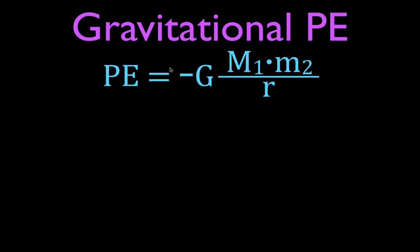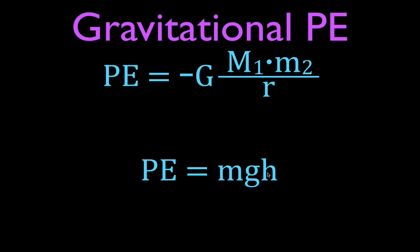This equation is the more general form for gravitational potential energy. But you've probably also seen this more specific equation, which says the gravitational potential energy is equal to the mass of the object times g — the acceleration due to gravity, which at the Earth's surface is 9.81 meters per second squared — times h, the height to which the object is moved. We use this equation near the Earth's surface, when g is going to be constant.